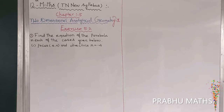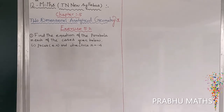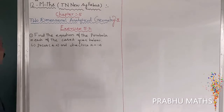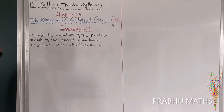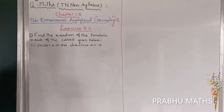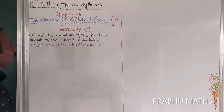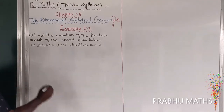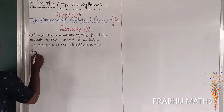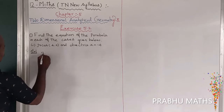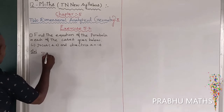Exercise 5.2: find the equation of the parabola in each of the cases given below. The first subdivision: focus is (4, 0) and directrix is x = -4.